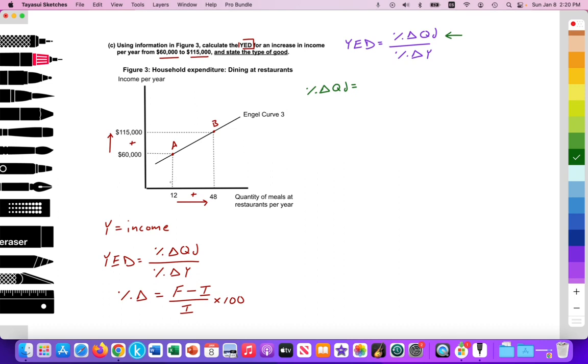Final minus initial. So let's make a note on our exam that this is our initial value. This is our final value. This is our initial value. This is our final value. So for quantity, 48 is the final minus the initial of 12. Divided by 12 times 100.